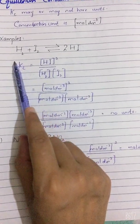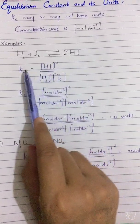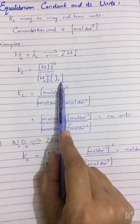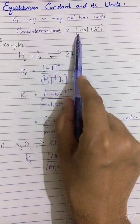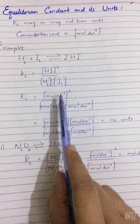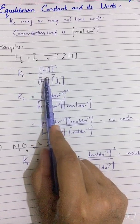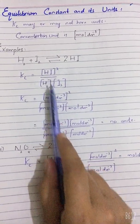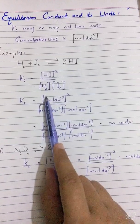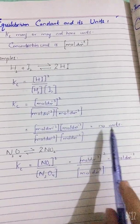Let's see a first example: H₂ + I₂ gives 2HI. You write the Kc expression with HI in the numerator and H₂ and I₂ in the denominator. The concentration unit is always mol per dm³. In this reaction there are 2 moles of HI, so the numerator is (mol/dm³)², and the denominator has one mole of H₂ and one mole of I₂, giving (mol/dm³)². These cancel out and there is no unit.